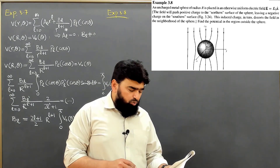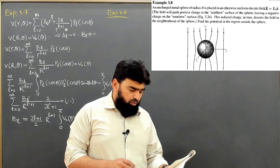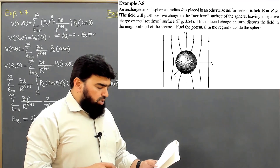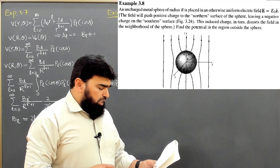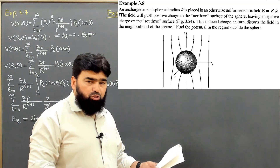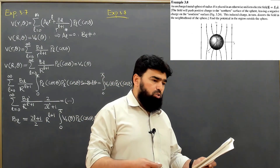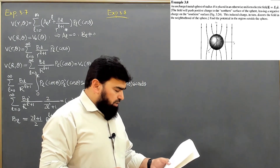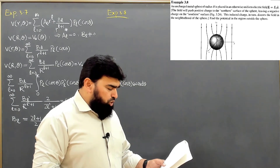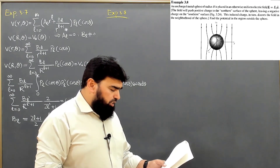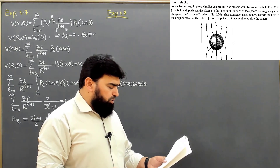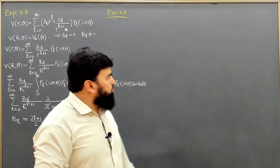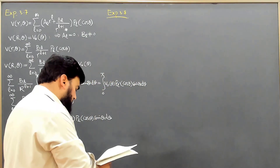The field will push positive charge to the northern hemisphere — the top side of this sphere — leaving a negative charge on the southern hemisphere, which is the lower part along the minus Z direction. This induced charge in turn distorts the field in the neighborhood of the sphere. We are supposed to find the potential in the region outside the sphere.